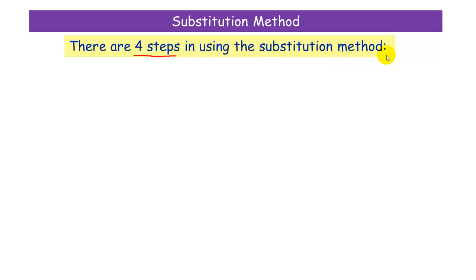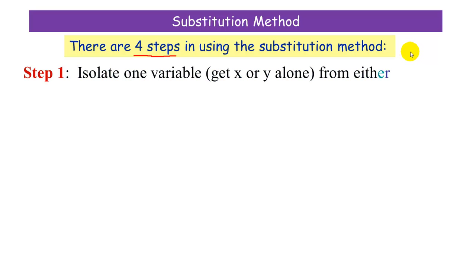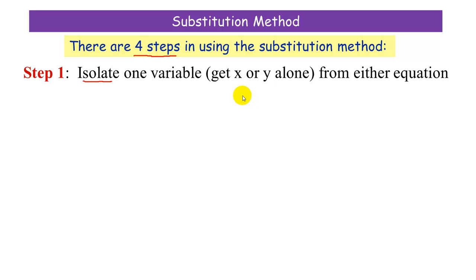I'm going to go through these steps pretty quickly, but feel free to go back and check steps if you need more clarification. Our first step is to isolate one of the variables — either x or y — from either equation. We'll have two equations in a system, called equation one and equation two, and you can get either x or y alone from either of the equations. That's our first step: isolate a variable.